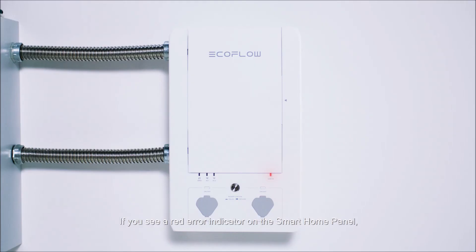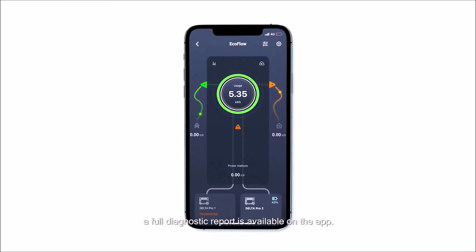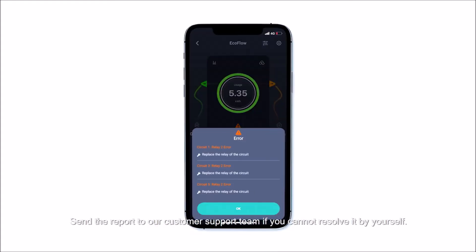If you see a red error indicator on the smart home panel, a full diagnostic report is available on the app. Send the report to our customer support team if you cannot resolve it by yourself.